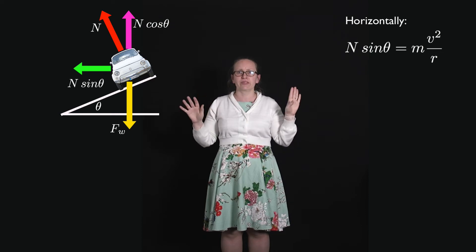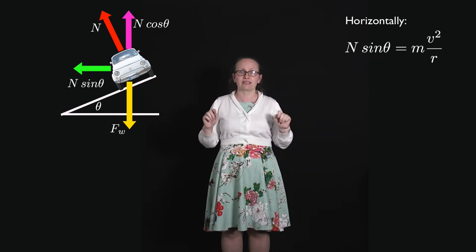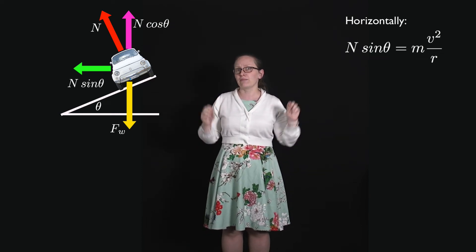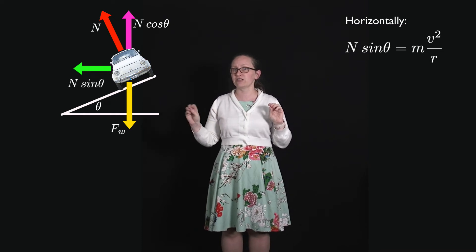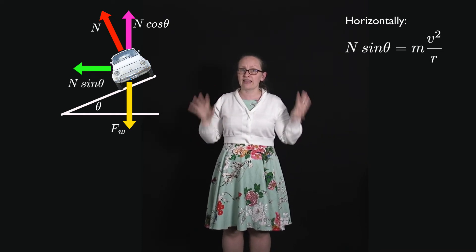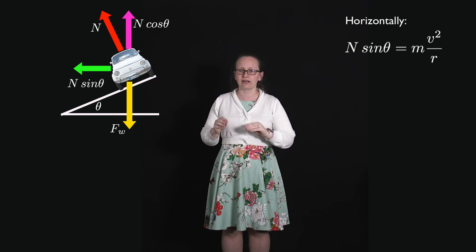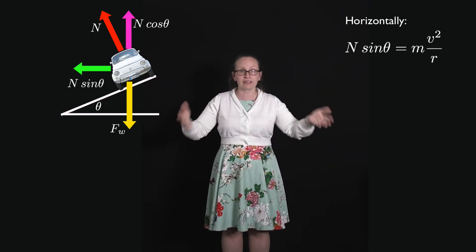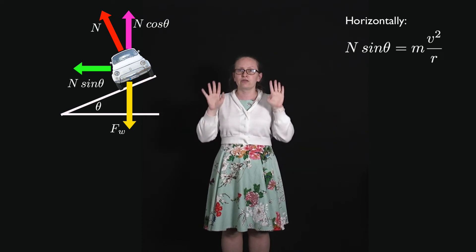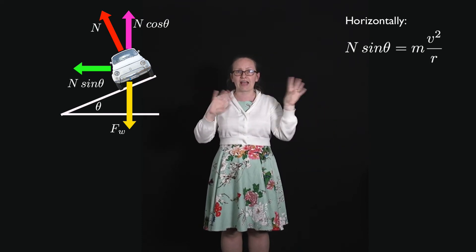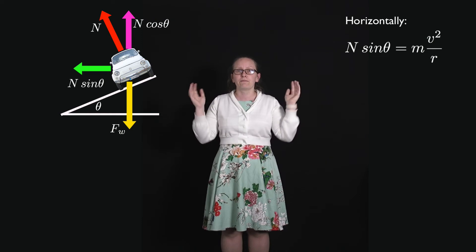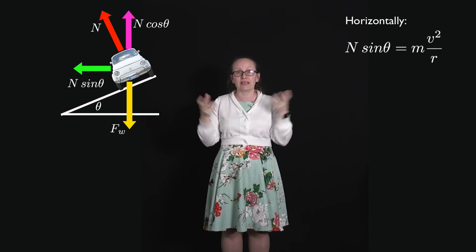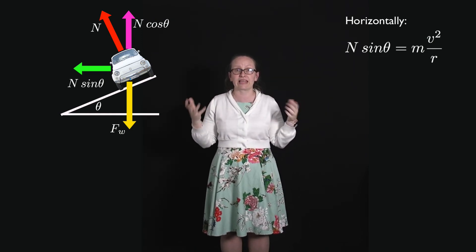Now the problem is at the moment we don't know what that normal force is. But we can actually work that out by considering the forces which are acting vertically. Vertically there is no net force because our car is not lifting up off the track or falling down into the track. So the two forces acting upon it vertically must be equal and opposite. They must sum together to give zero.